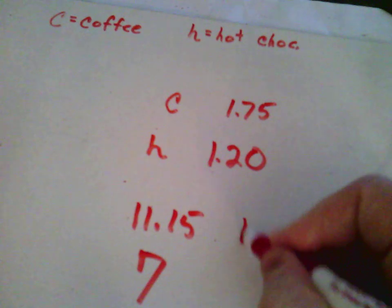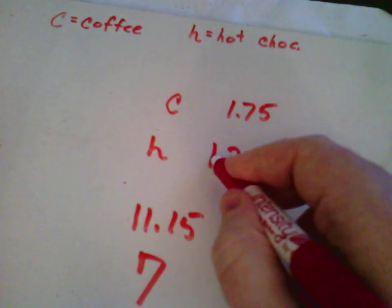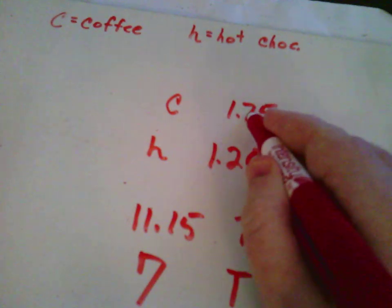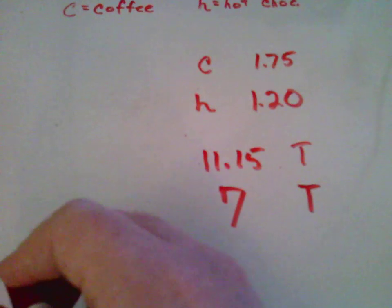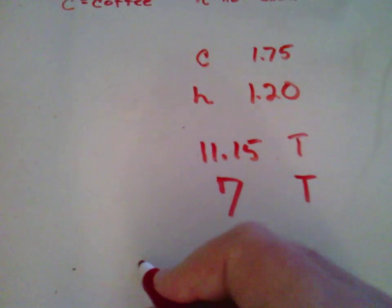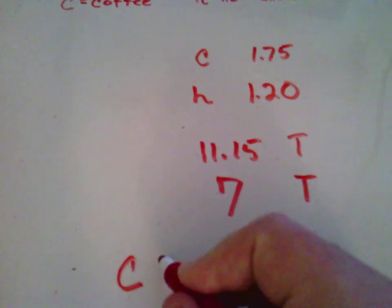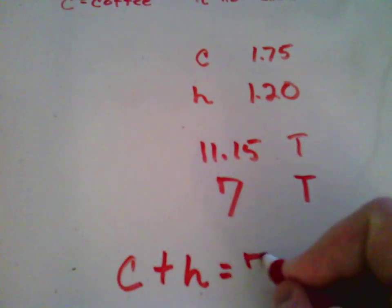This is a total, and this is also a total. This is the price per hot chocolate. This is the price per coffee. Well, the total number of beverages purchased in total is seven, so the total number of coffees plus chocolates is equal to seven.